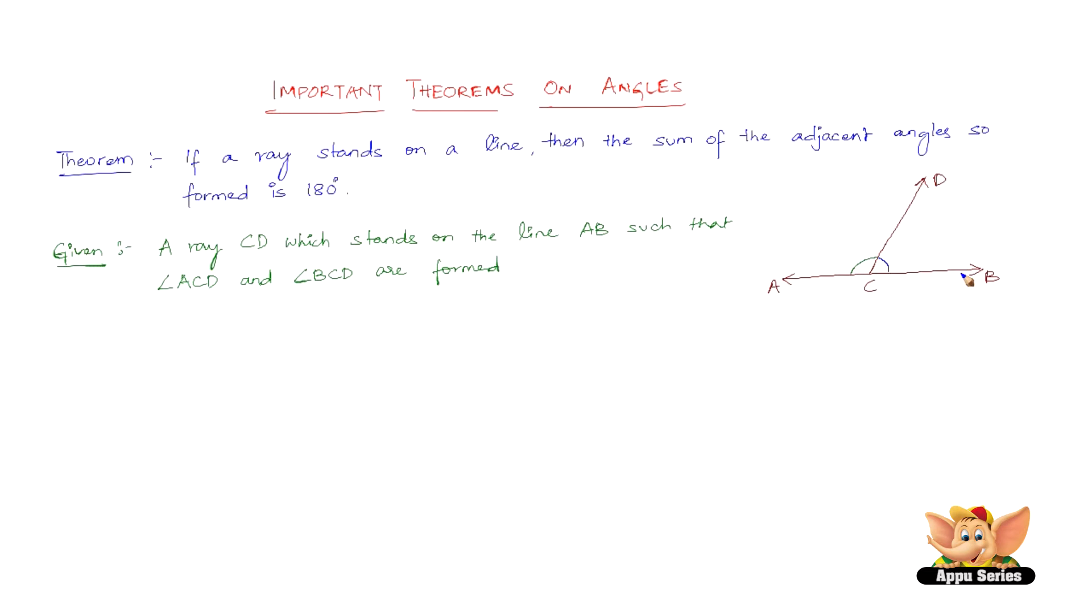now CD stands on AB. So we need to prove that angle ACD plus angle BCD is 180 degrees. To prove, we need to prove that angle ACD plus angle BCD equals 180 degrees.